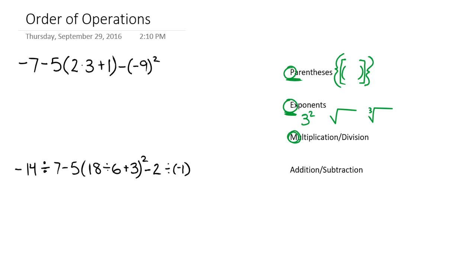Next, we have multiplication and division. These ones we have to do in order from left to right. So it's not always going to be multiplication that comes first. It's not always going to be division that comes first. We just move from left to right and see where we go from there.